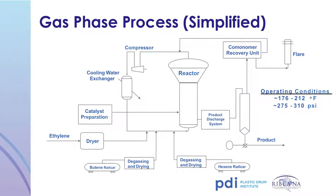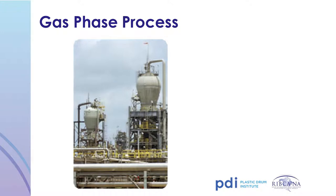The gas phase process begins with treating ethylene and other components before sending them to a reactor. The reactor, nicknamed a 'matchstick reactor' due to its appearance, uses the components to form a fluidized bed — similar to powdered laundry detergent suspended in the air. The suspended powder is formed and then discharged as polyethylene powder, which is then formed into pellets under heat and pressure through an extruder. During this process, various additives such as antioxidants can be added to the resin before it is formed into pellets.